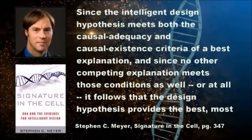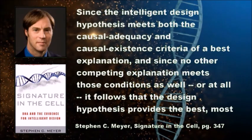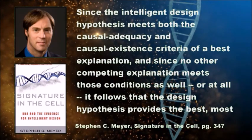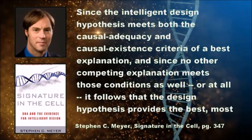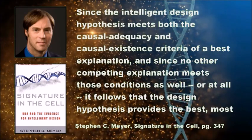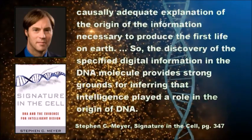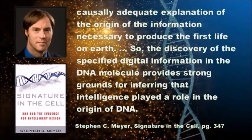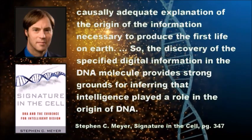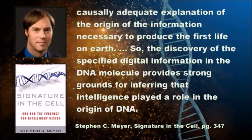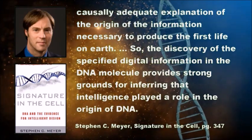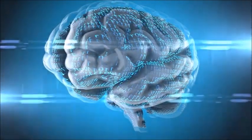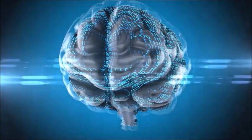Stephen Meyer argues, since the intelligent design hypothesis meets both the causal adequacy and causal existence criteria of the best explanation, and since no other competing explanation meets those conditions as well, or at all, it follows that the design hypothesis provides the best, most causally adequate explanation of the origin of the information necessary to produce the first life on Earth. So the discovery of the specified digital information in the DNA molecule provides strong grounds for inferring that intelligence played a role in the origin of DNA. Clearly, if Meyer is right that only intelligence is known to produce information, then intelligent design becomes the best explanation for the origin of life.